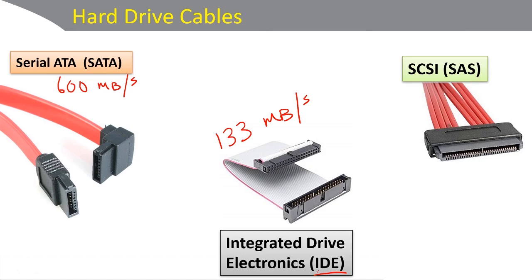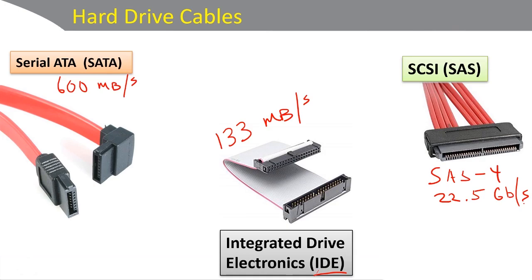An example of that is Serial Attached SCSI, or SAS. Today with SAS, there are different versions. The latest version, as of the recording of this video, came out in 2017. That is SAS version 4, which could do as much as 22.5 gigabits per second — a very fast connection.